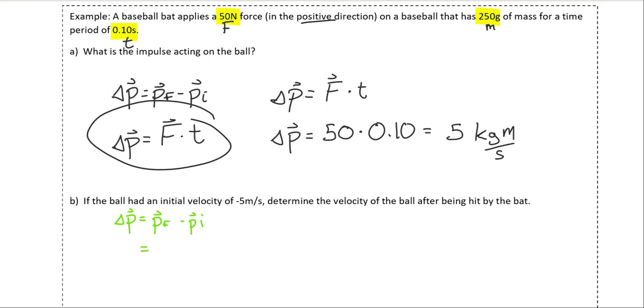We can break down these momentums into their formula. Final momentum would be the mass multiplied by the final velocity. And the initial momentum is going to be the mass multiplied by the initial velocity. And we can use all of the information that we're given in the problem to plug in and solve.